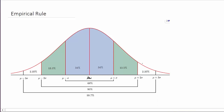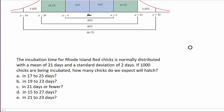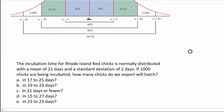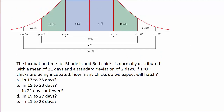So what we'll do is we'll use this curve here to find our probabilities. The problem says: the incubation time for Rhode Island Red chicks is normally distributed with a mean of 21 days and a standard deviation of two days. If 1,000 chicks are being incubated, how many chicks do we expect will hatch?